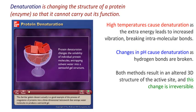Denaturation is the changing of the structure of a protein so that it can no longer carry out its function. We typically focus on denaturation with enzymes, but any protein can be denatured. High temperatures cause denaturation because they give molecules extra energy, leading to increased vibrations that break the intermolecular bonds holding the secondary and tertiary structure together. Changes in pH can also cause denaturation because any hydrogen bond — whether in secondary, tertiary, or quaternary structure — is affected. Both of these methods result in an altered three-dimensional structure, and denaturation is completely irreversible.